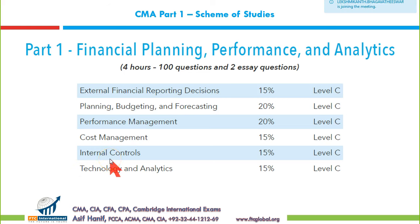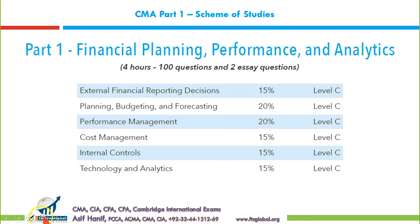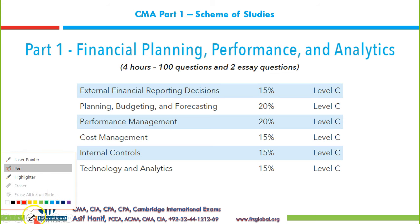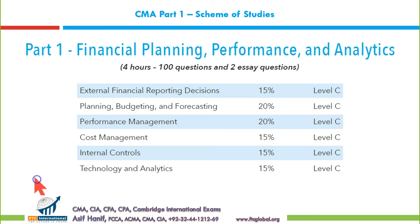This is the detailed composition of CMA Part 1, which has been split into six sections. Section A, which we are starting today, relates to financial reporting and integrated reporting that was added from January 2020. It has 15% weightage.